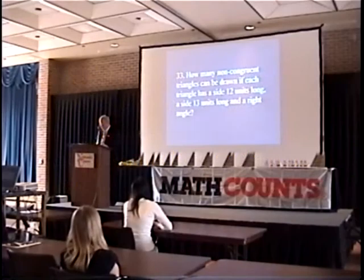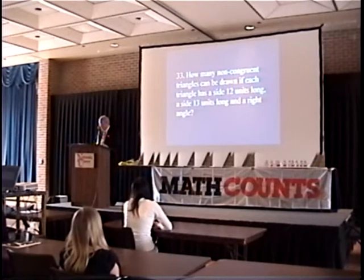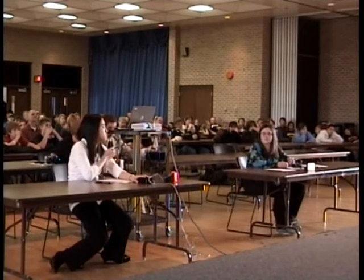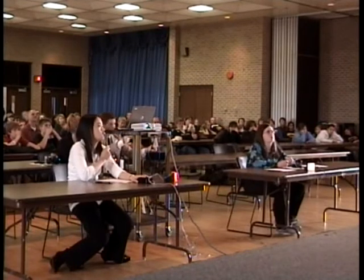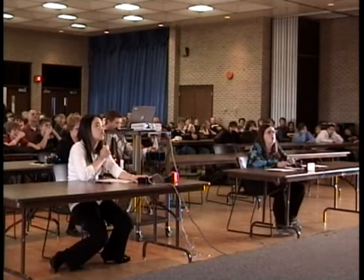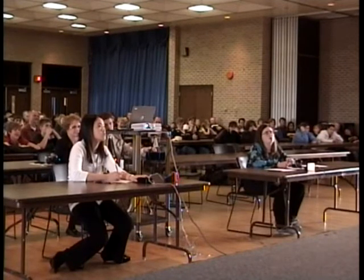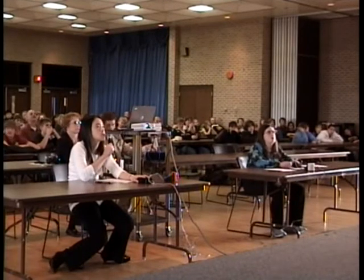How many non-congruent triangles can be drawn if each triangle has a side 12 units long and a side 13 units long? Katie? 1. 1 is incorrect. Ingrid? 22. 22 is also incorrect. The correct answer is 2.